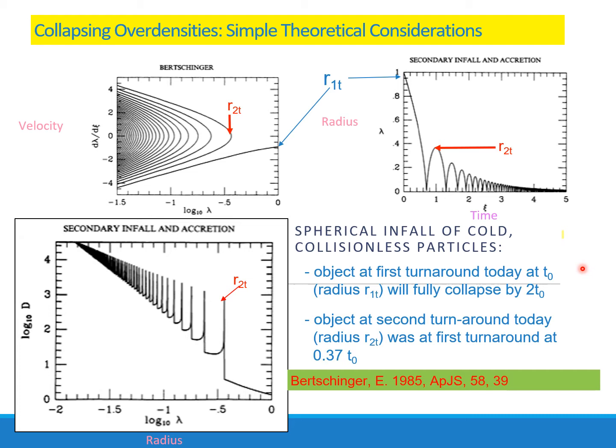There was no connection with observations until 2015, when Brent Talley showed that you could observe the first and second turnaround radii by discontinuities in the density of the galaxy distribution. You can see the first and second turnaround radii for the Virgo cluster. Brent Talley is now an emeritus professor at the University of Hawaii, and this was the last meeting I attended in South Africa in February last year.